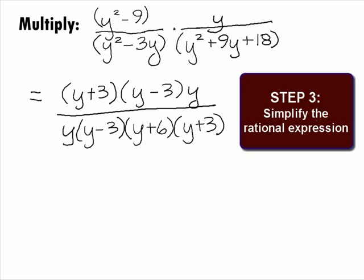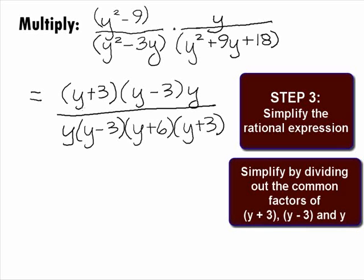In Step 3, we want to simplify the rational expression. It looks like we have several common factors that we can divide out. We can divide out a y plus 3. We can also divide out y minus 3 and the factor of y.